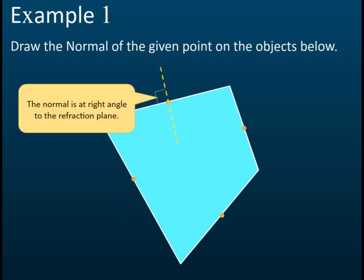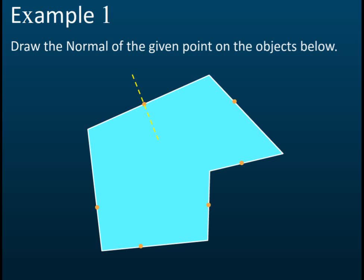The normal is at right angles to the refraction plane. All normals shown are 90 degrees with their respective planes. You can use a set square to help you, or a protractor to measure 90 degrees exactly, but a ruler also works — when you place the scale coincident with the plane, the ruler is at right angles to the plane.